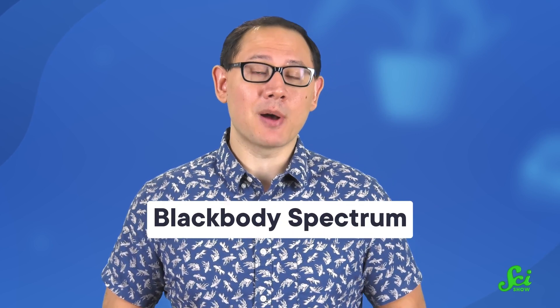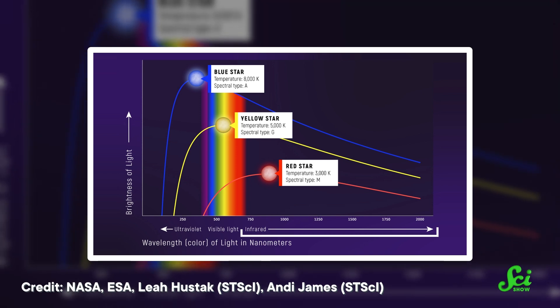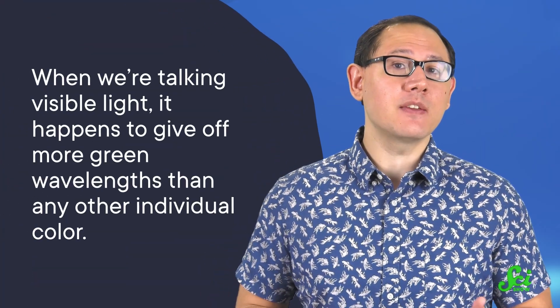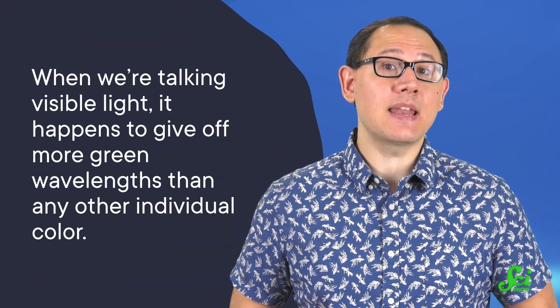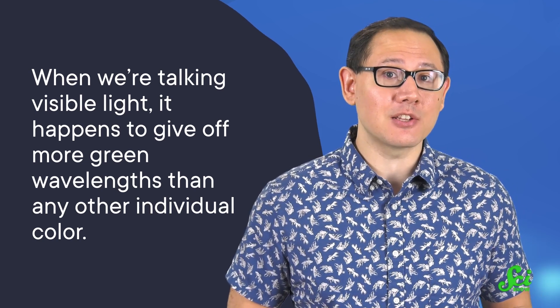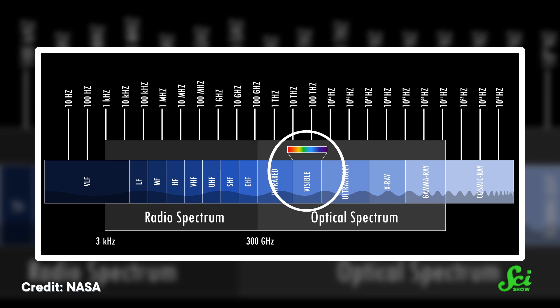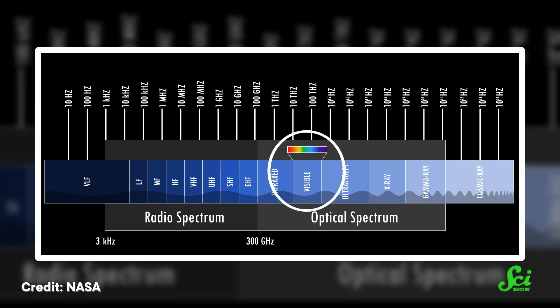The range of random light coming off of an object is called its blackbody spectrum. Stars like the sun give off most of their energy in the infrared, even if they peak — or have the highest intensity — in the visible range. So it's not like the sun gives off just one color. When we're talking visible light, it happens to give off more green wavelengths than any other individual color. The difference isn't that huge, though. Red, yellow, green, and blue just aren't that physically different.